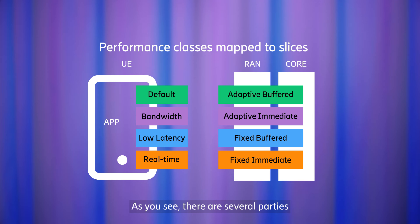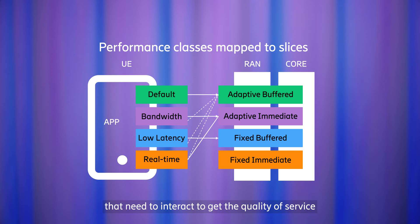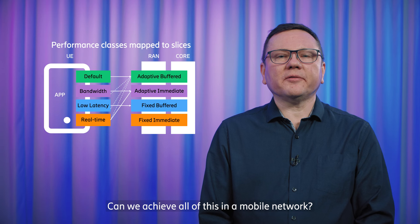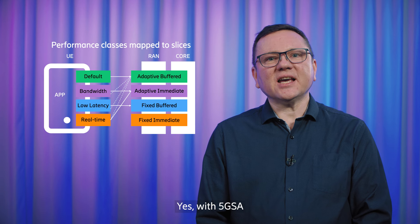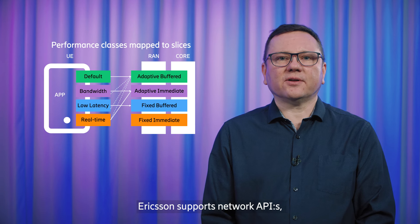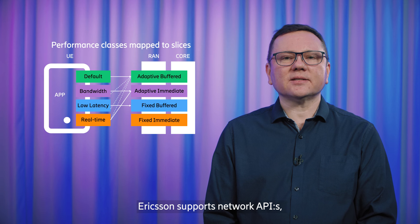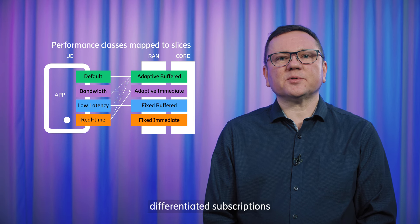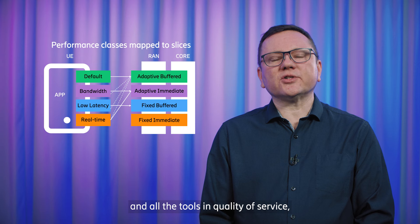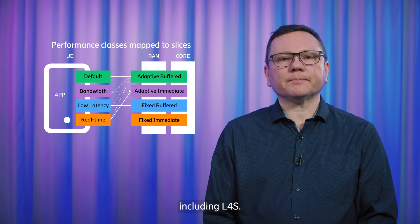As you can see, there are several parties that need to interact to get quality of service, and there are multiple decision points that need to cooperate as well. Can we achieve all of this in a mobile network? Yes. With 5G SA, Ericsson supports network APIs, differentiated subscriptions, and all the tools in quality of service — including L4S.